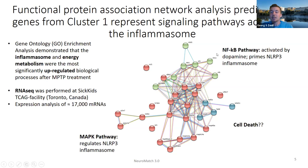The NF-κB pathway primes the NLRP3 inflammasome. Another pathway affected, shown in red, was the MAP kinase pathway, which regulates the NLRP3 inflammasome. In blue, we have more general terms which can be clustered into cell death, with the caspases present.